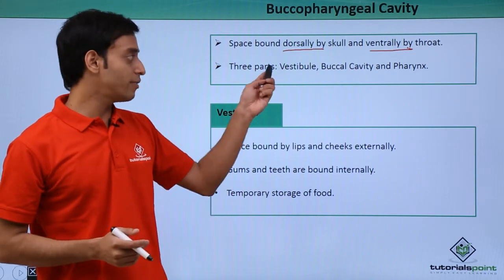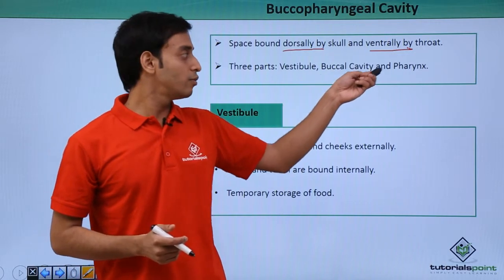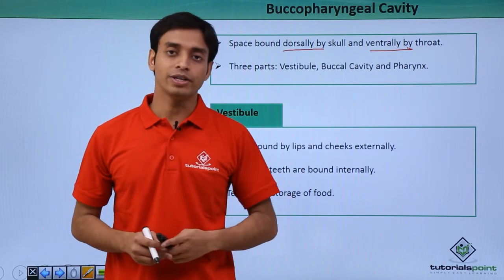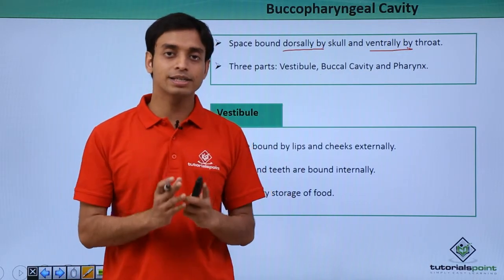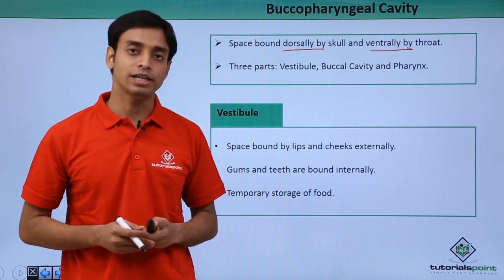The buccopharyngeal cavity has three important parts: the vestibule, the buccal cavity, and the pharynx. We'll be discussing all these parts in detail.